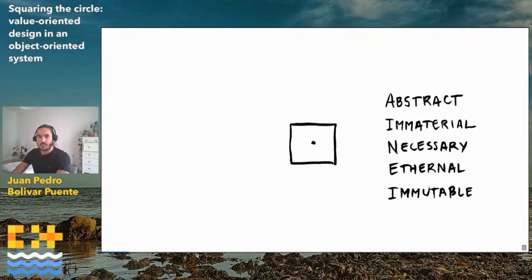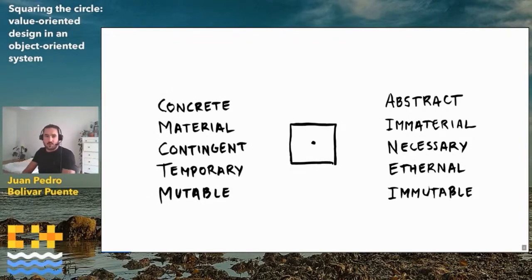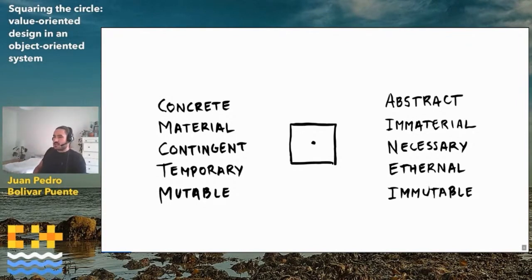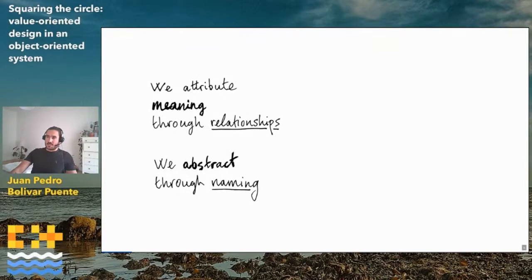When we program, we have to put these values somewhere — we put them in boxes. These boxes are objects: concrete entities made of memory. They are material, contingent, made of atoms and electricity. They are temporary and they are mutable. Objects are the bread and butter of C++.